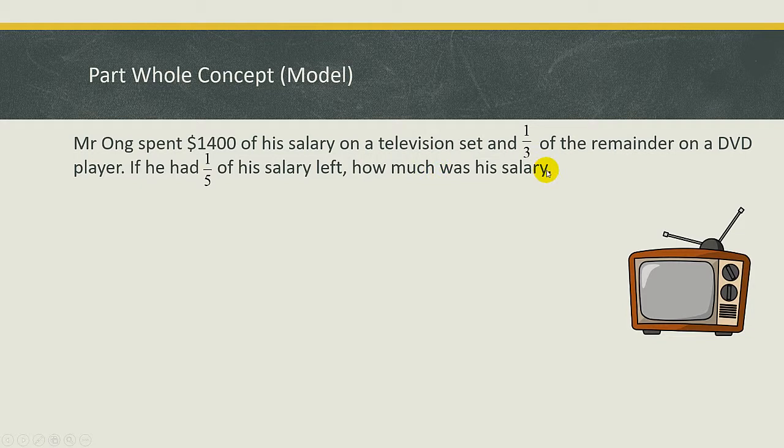Okay, so first of all, you must understand that this one-third represents the remainder while this one-fifth is representing the salary. So don't be confused, okay. It's like this one-third of the smaller part but this actually one-fifth of the whole amount of salary. Alright, so you must understand the relationship between them.